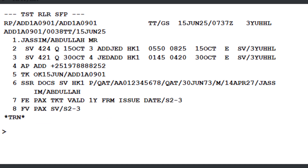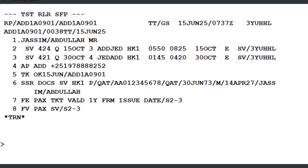Now let's add the form of payment. Keep in mind that available payment methods — such as cash, INV (invoice), AGT (agent), or CC (credit card) — may vary depending on your BSP market and the airline. For this demonstration, we'll use the cash payment method. Simply type the FP (form of payment identifier) followed by cash, then press Enter to proceed.